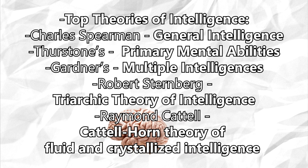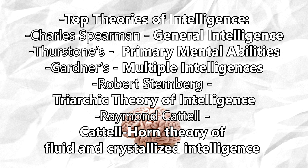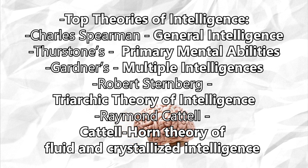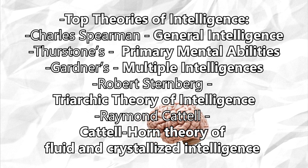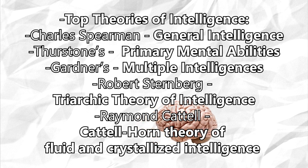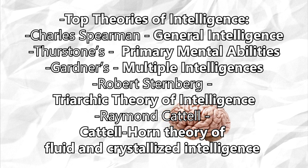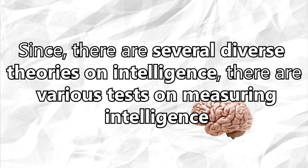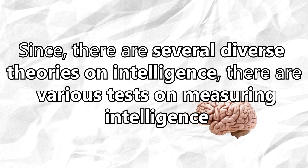Top theories of intelligence include: Charles Spearman's General Intelligence, Thurston's Primary Mental Ability, Gardner's Multiple Intelligences, Robert Sternberg's Triarchic Theory of Intelligence, and Raymond Cattell's Theory of Fluid and Crystallized Intelligence. There are several diverse theories on intelligence.